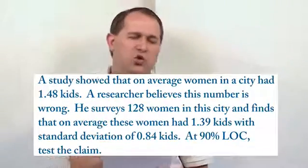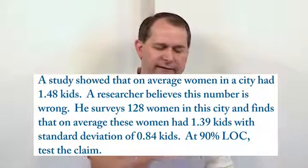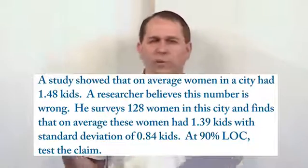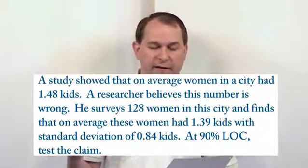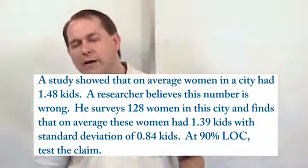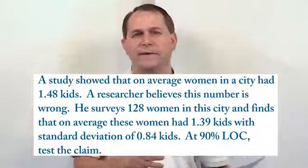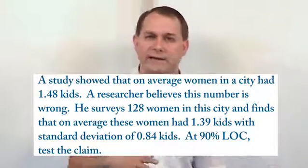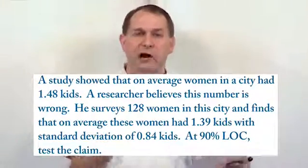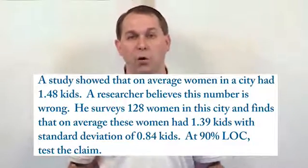Notice that there's no wording in this problem that talks about greater than or less than. All it says is a study showed that the average number of kids that women had was 1.48 and a researcher believes this number is wrong. It didn't say the researcher thought the number was too high, too low, or that they would have more or less than that. It just said that the researcher thinks the number is wrong — he doesn't care if the number is too high or too low, he just thinks 1.48 is wrong.